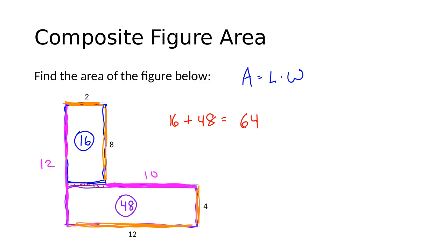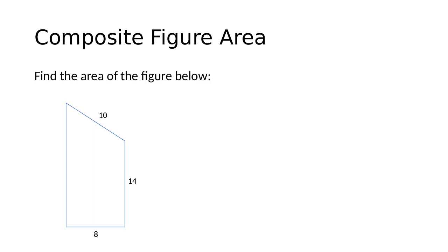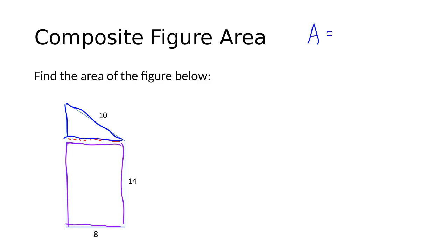Let's look at another example of finding the area of a composite figure. Find the area of the figure below. This one is not an L shape, so I'm not going to cut it into two rectangles. Instead, I'll draw a horizontal line so that I've created a rectangle on the bottom and a triangle on top. I'll use the formula for the area of a rectangle — length times width — and the formula for area of a triangle — one-half times base times height — then add those together to get the total area.